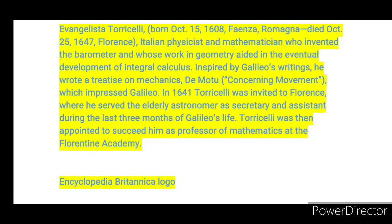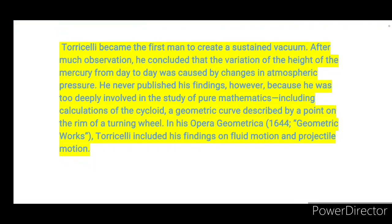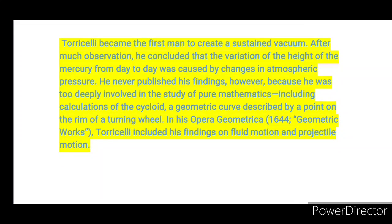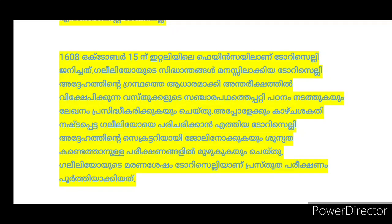Torricelli was then appointed to succeed Galileo as professor of mathematics. He became the first man to create a sustained vacuum. After much observation, he concluded that the variation of height of the mercury from day to day was caused by changes in atmospheric pressure. He never published his findings, however, because he was too deeply involved in his study of pure mathematics, including calculation of the cycloid — a geometric curve described by a point on the rim of a turning wheel. In his Opera Geometrica, Torricelli included his findings on fluid motion and projectile motion.